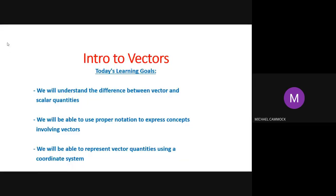The goals are what you see on the screen. We want to be able to understand the difference between vectors and scalar quantities — they're related but not the same. We're going to use proper notation to express vector concepts, and then we're going to represent vector quantities using a coordinate system. To introduce all of that, I'm going to run a little video clip for you.